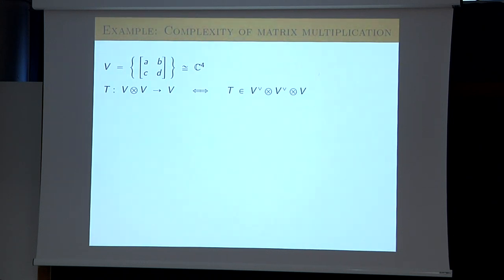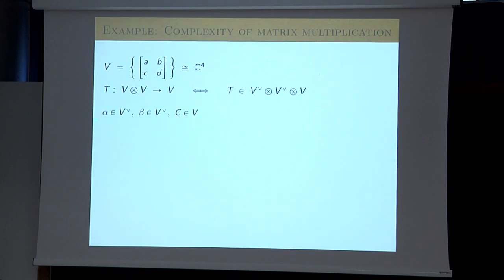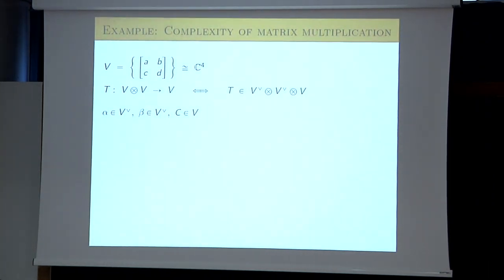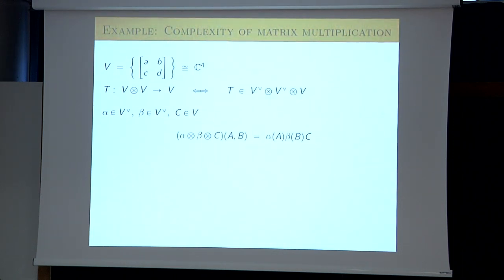Let me make this very explicit. If you give me an indecomposable element — a linear functional α, a linear functional β, and a matrix C — then I can define a linear map: you apply it to A, B, and compute α(A)·β(B)·C. These are complex numbers, you multiply them, and then multiply by the matrix C. This is how an indecomposable tensor defines such an operation.